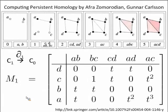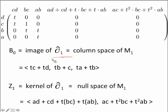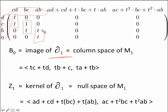Last time, we took a look at the Boundary 1 map going from the one-dimensional objects — from the one-dimensional edges to our zero-dimensional vertices. We can see that the image of Boundary 1 is going to be T times D plus C, 1C plus TB, and T times A plus B, and so we got the image — the column space of M1, the map corresponding to Boundary 1.